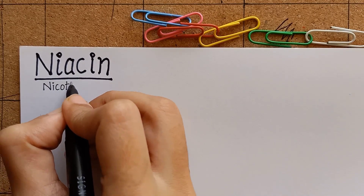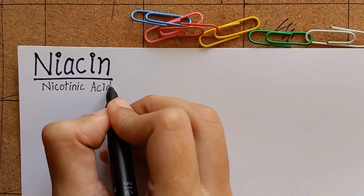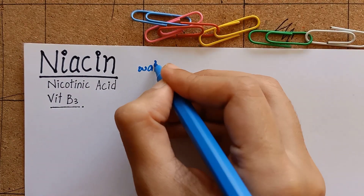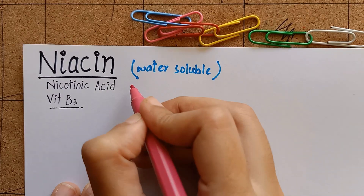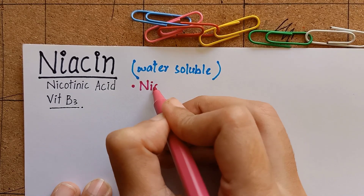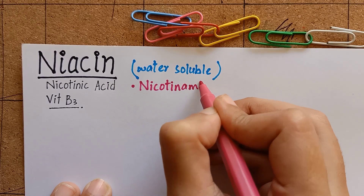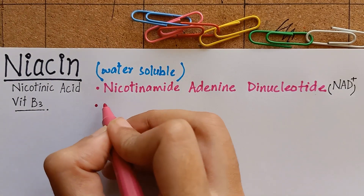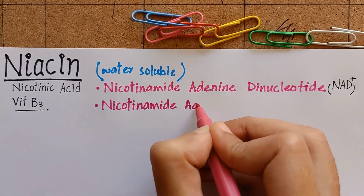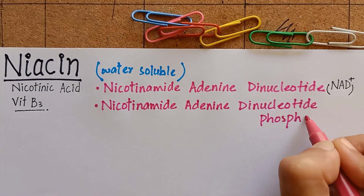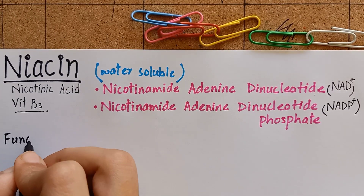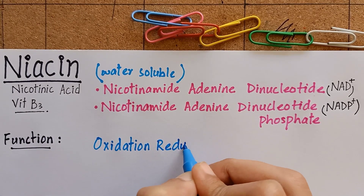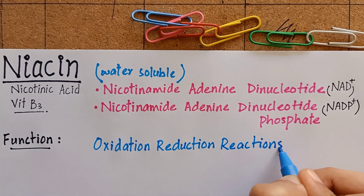We are going to learn about niacin, or nicotinic acid, also known as vitamin B3. Niacin is a water-soluble vitamin. There are two biologically active coenzyme forms of niacin: nicotinamide adenine dinucleotide (NAD) and nicotinamide adenine dinucleotide phosphate (NADP). The biochemical function of these coenzymes, NAD and NADP, is that they are involved in a variety of oxidation-reduction reactions.